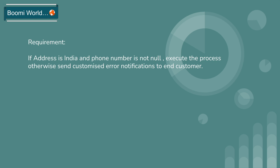Here I'm providing one sample requirement. You are getting employee details from a source system. From those employee details, if the address is India and the phone number is not null, then execute the process; otherwise send customized error notifications to the end customer. Based on this requirement we can implement the Business Rule Shape on Boomi.